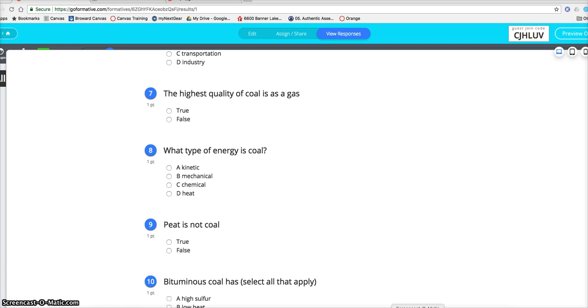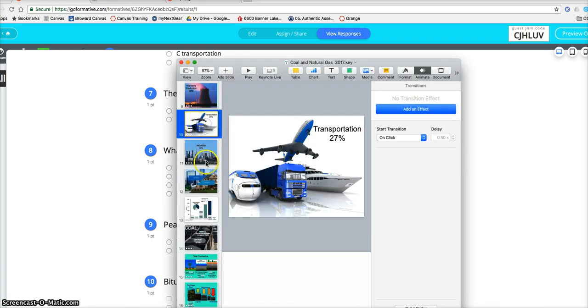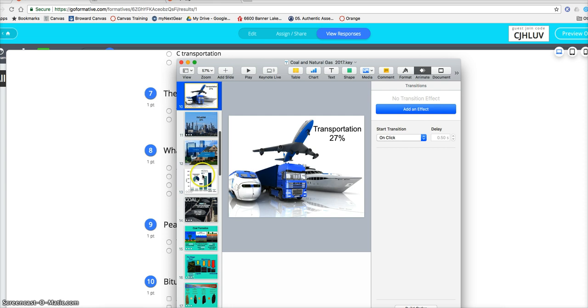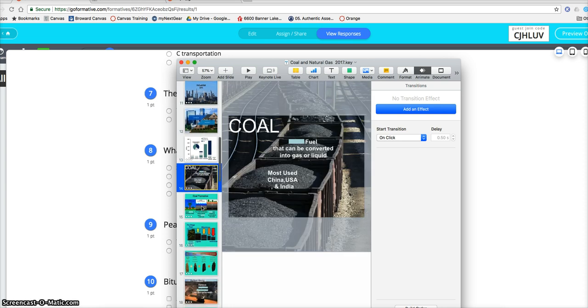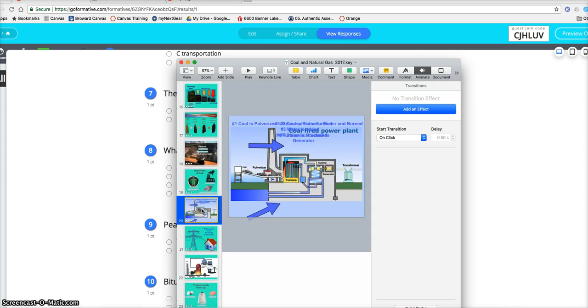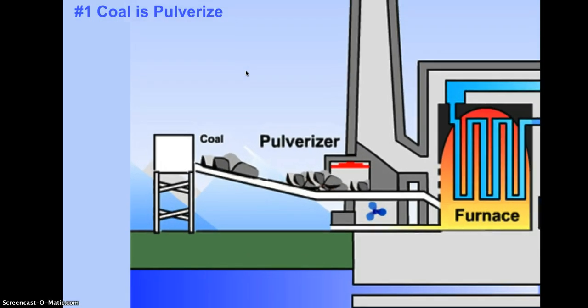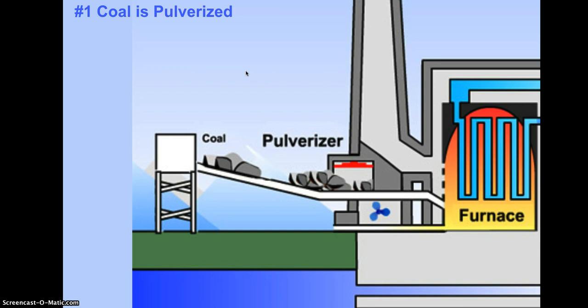And let's look at the electricity production. So far we've covered this. Electricity production is right here, so you could see that. So coal first is pulverized. What does that mean? Crushed. How do we get coal? Surface and subsurface. What type of surface? Open pit. Good.